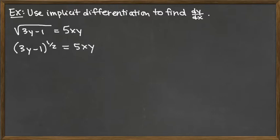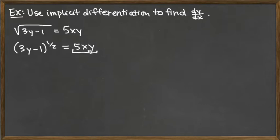We need to stop and think before we actually take the derivative. On the left hand side, we see that this is a chain rule because we have something ugly raised to a power. That something ugly actually involves y, which is our special variable, and so it's actually going to be a nested chain rule. On the right hand side, we have 5 times x times y, so we actually see a product there — two things multiplied together. We've got a 5x times a y.